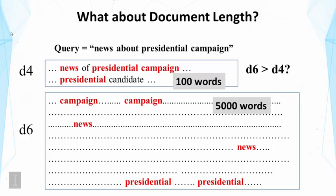Here I show two example documents. D4 is much shorter, with only 100 words. D6, on the other hand, has 5,000 words. If you look at the matching of these query words, we see that in D6 there are more matchings. But one might reason that D6 may have matched these query words in a scattered manner, so maybe the topic of D6 is not really about the topic of the query. The discussion of 'campaign' at the beginning of the document may have nothing to do with the matching of 'presidential' at the end.